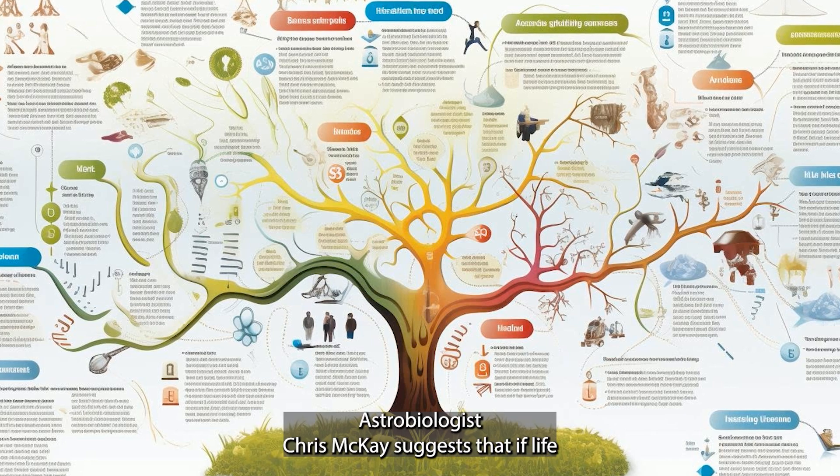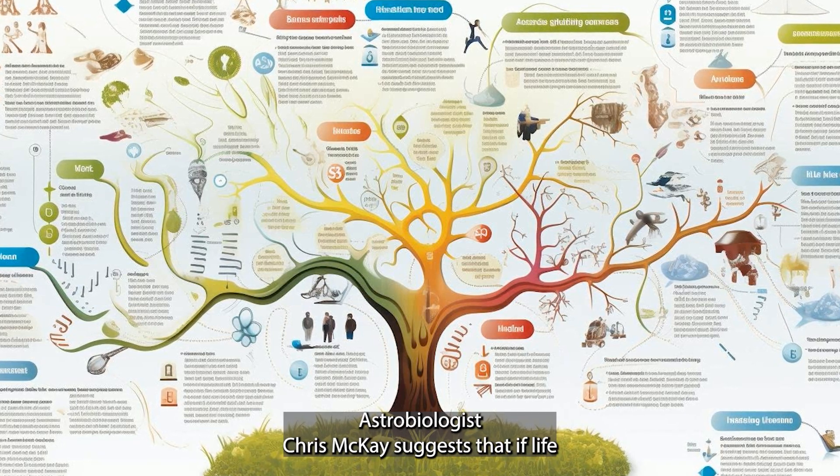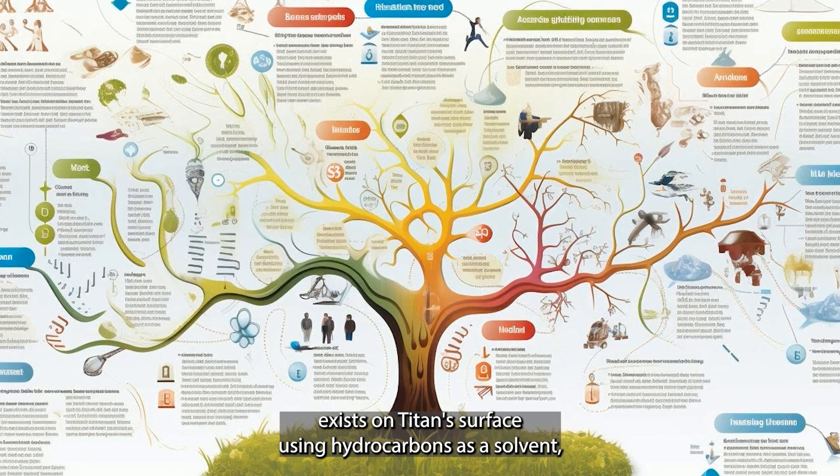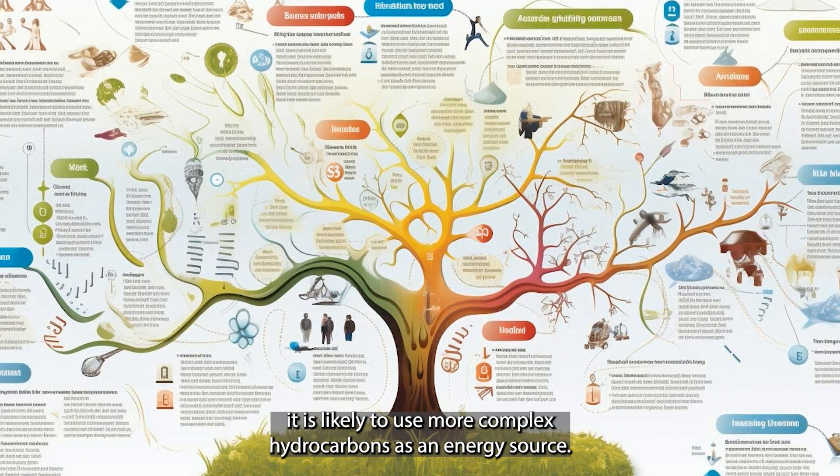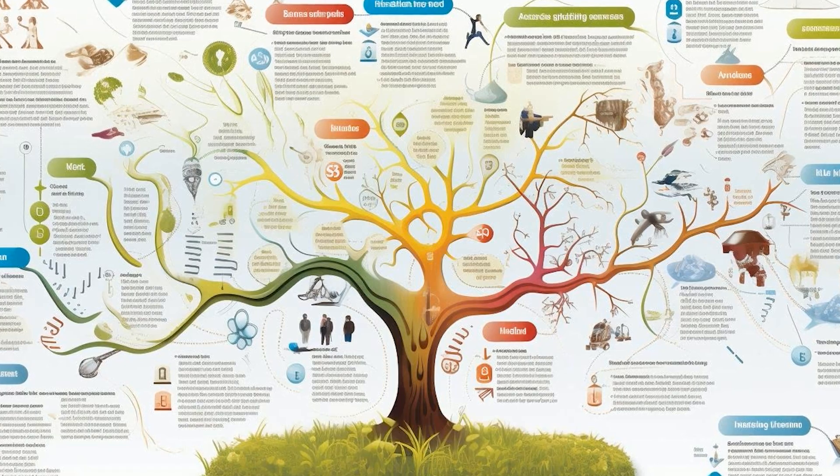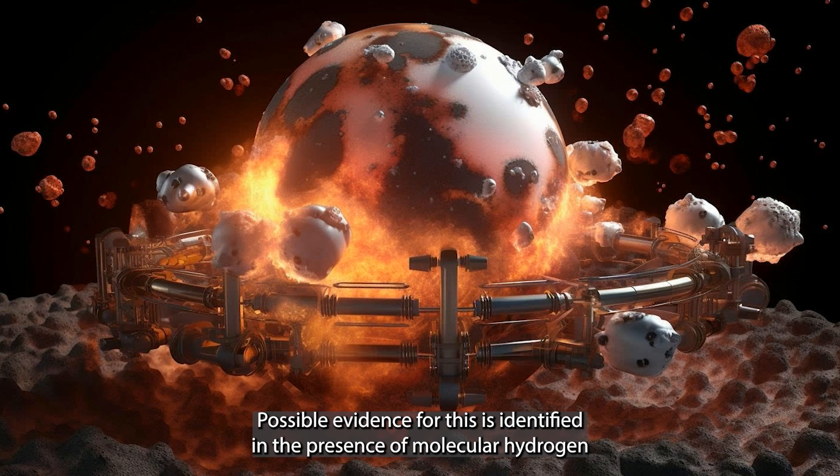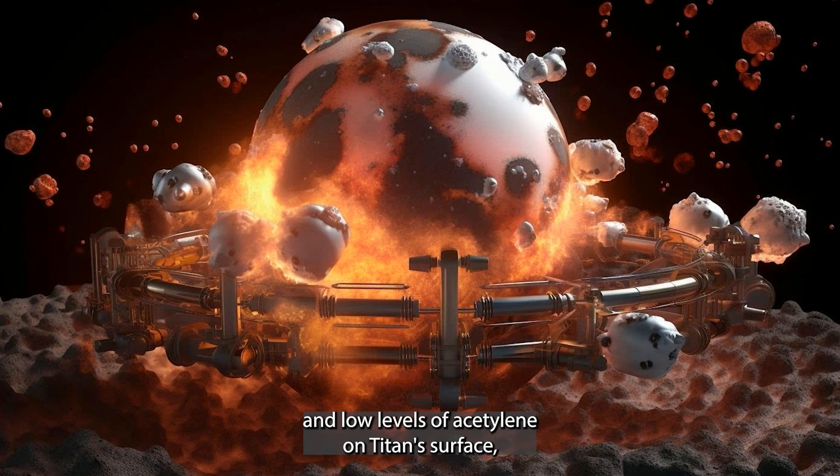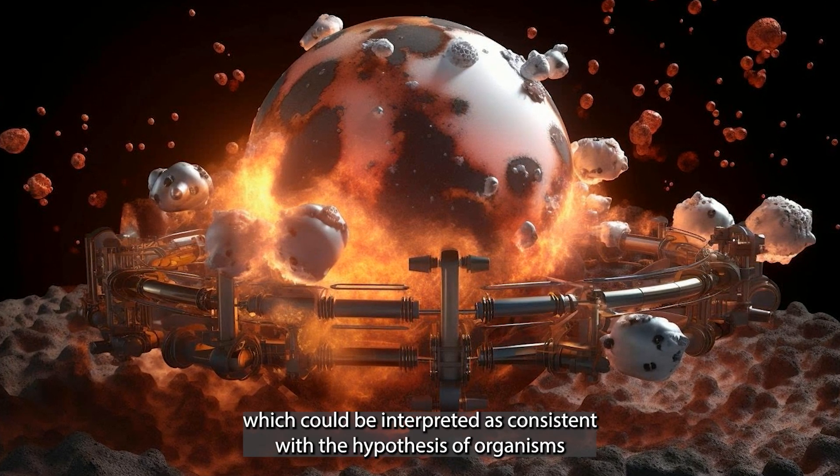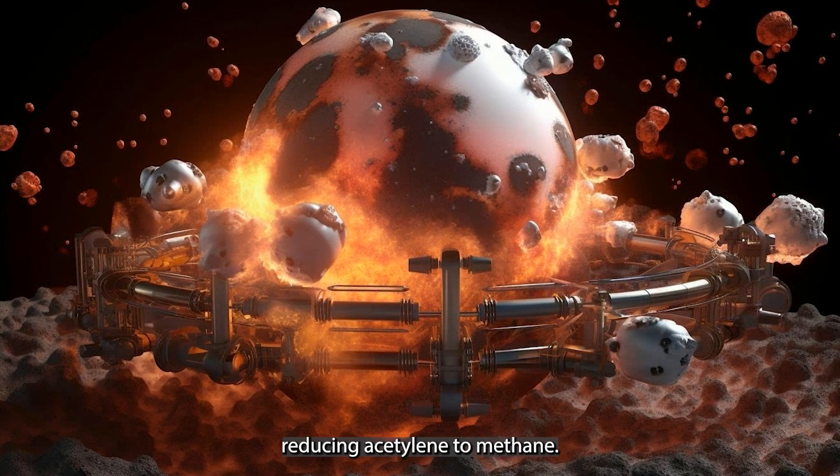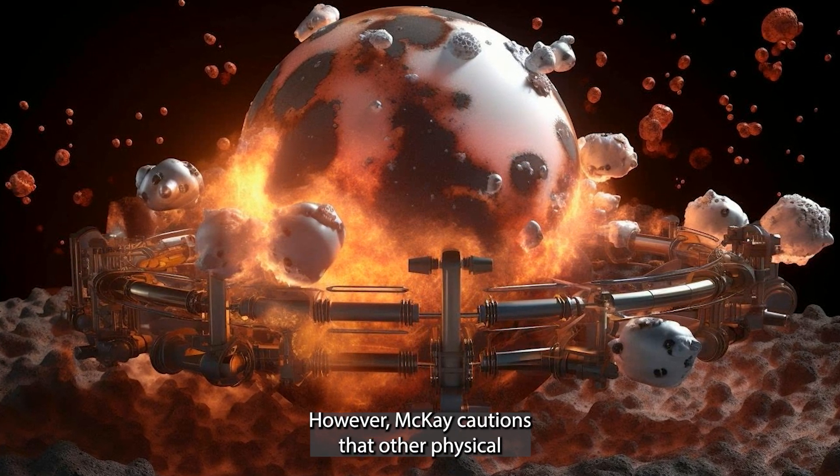Astrobiologist Chris McKay suggests that if life exists on Titan's surface using hydrocarbons as a solvent, it is likely to use more complex hydrocarbons as an energy source. Possible evidence for this is identified in the presence of molecular hydrogen and low levels of acetylene on Titan's surface, which could be interpreted as consistent with the hypothesis of organisms reducing acetylene to methane.